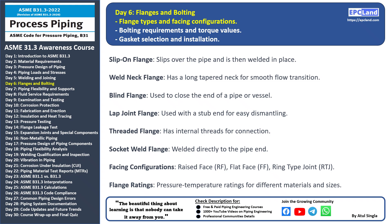Socket weld flange: this flange is directly welded to the pipe end, providing good strength and fluid flow. Facing configurations: flange facing refers to the contact surface between flanges. Raised face (RF) offers a tight seal; flat face (FF) is used for low pressure systems; and ring type joint (RTJ) provides excellent sealing in high pressure applications. Flange ratings: flanges are rated based on pressure-temperature combinations, with specific ratings for different materials and sizes to ensure safe and reliable operation.